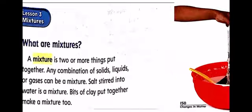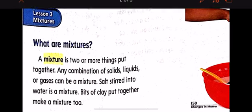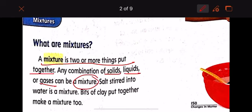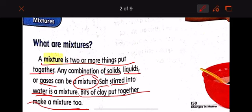A mixture is two or more things put together. Any combination of solid, liquid, or gases can be a mixture. Imagine if we stirred salt into water, it will become a mixture. Or bits of clay put together make a mixture too.